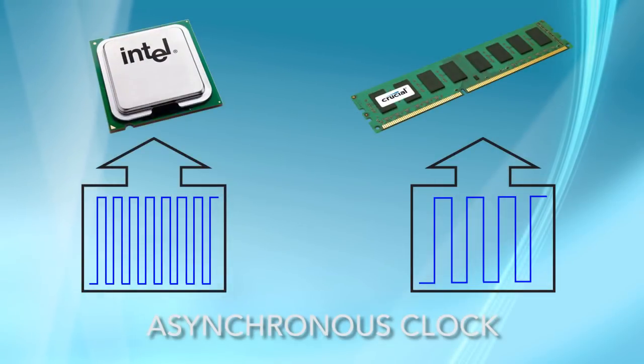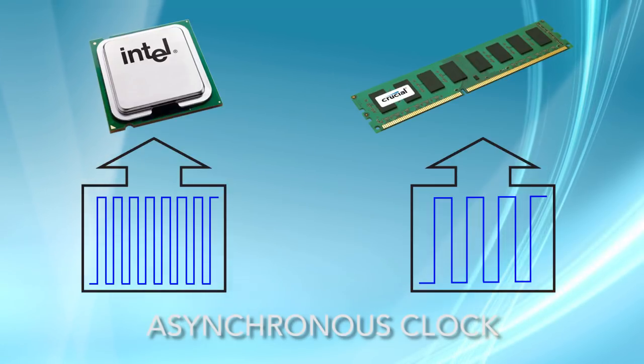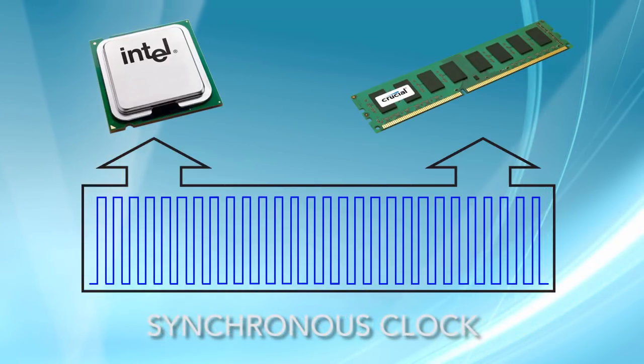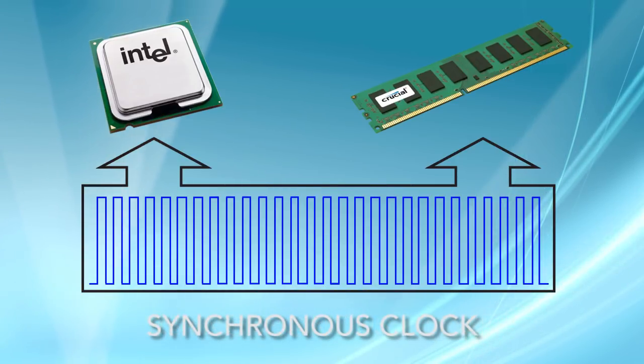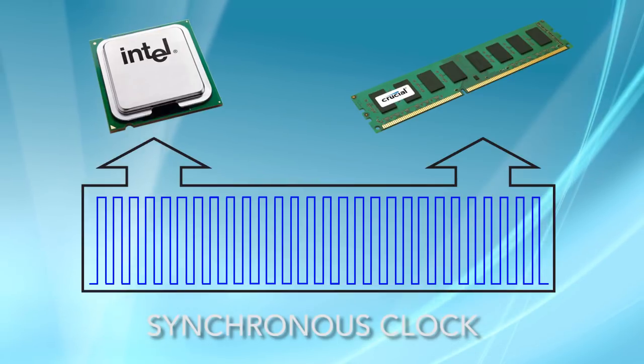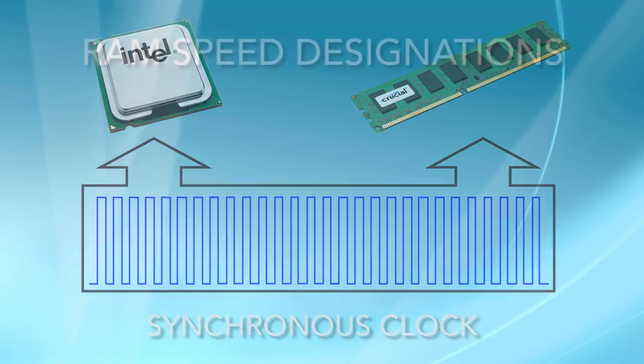Memory has changed over the years. In early computers, memory processed data out of sync with the processor. Now, by sharing the system clock, memory processes data in sync with the processor and the frontside bus.